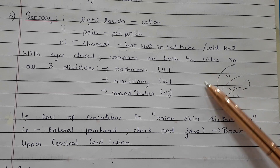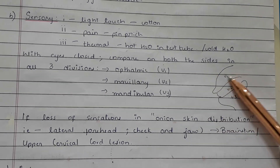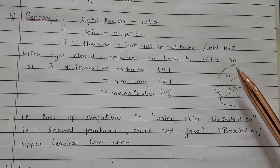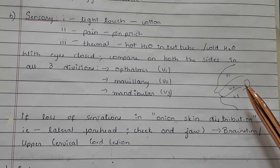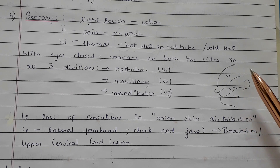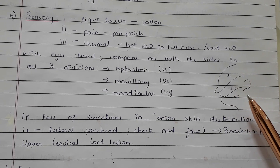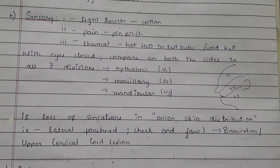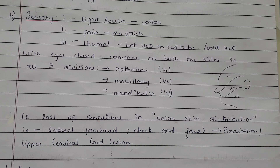With the patient's eyes closed, compare both sides in all three divisions — ophthalmic, maxillary, and mandibular (V1, V2, and V3). If loss of sensations is seen in the onion skin distribution, i.e., the lateral forehead, the cheek, and the jaw, it means there is a brainstem or upper cervical cord lesion.